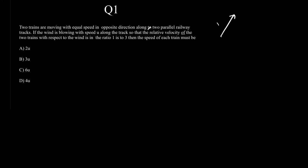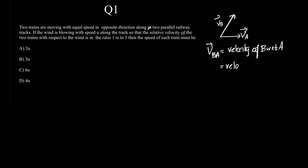Before we get into this question specifically, let me give you the concept of relative velocity. Say, for example, let's take two vectors — vector B and vector A. Relative velocity is basically velocity of B with respect to A, which means velocity of P with respect to A, or in other words, the velocity of P as seen by A.